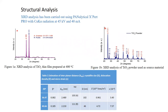For structural analysis, Figure 1a shows the XRD analysis of the TiO2 thin film prepared at 400°C. It shows signatures of the TiO2 thin film with two peaks, while the source material TiO2 powder exhibits mixed phases as well. Table 1 provides estimates of interplanar distance, crystallite size, dislocation density, and microstrain.